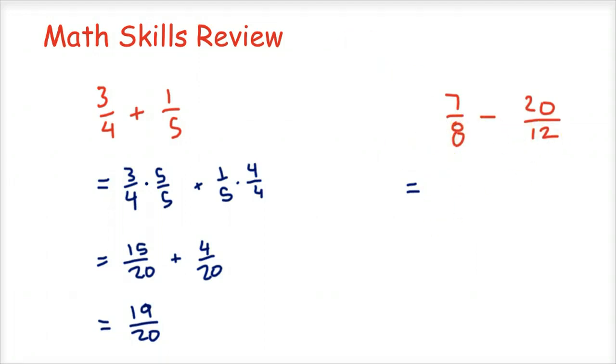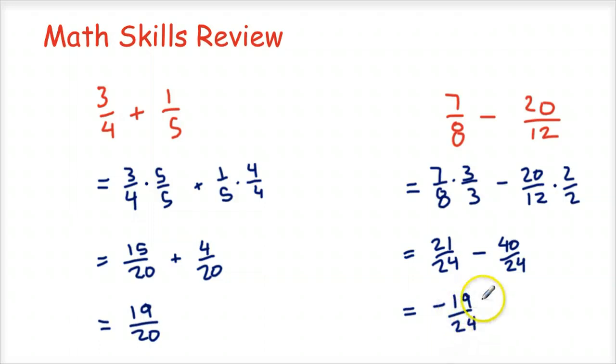Three times eight is twenty-four. So I'm going to have seven eighths times three over three minus twenty twelfths times two over two, because two times twelve equals twenty-four. So seven times three is twenty-one. So I have twenty-one twenty-fourths minus twenty times two, that's forty twenty-fourths. And so now I have twenty-one minus forty twenty-fourths. So I'm going to have a negative number there.